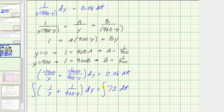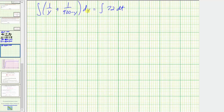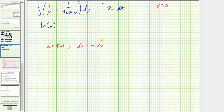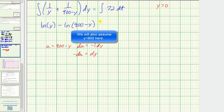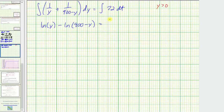Let's find these integrals. On the left side, the integral of one over y with respect to y is the natural log of the absolute value of y. Assuming y is greater than zero, we have natural log of y. When integrating one over the quantity 900 minus y, we perform u-substitution where u equals 900 minus y, so du equals negative dy, meaning we get an extra factor of negative one. So we have minus natural log of the quantity 900 minus y. On the right, the integral of 72 with respect to t is 72t plus a constant c sub one.